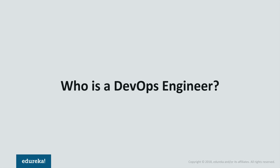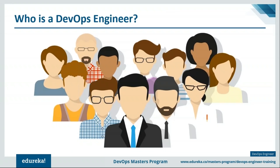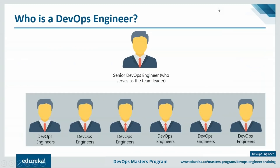Let's understand who is a DevOps engineer. A dedicated DevOps team consists of a few professionals who are each responsible for different elements. Like any other team, there are two main roles: the senior DevOps engineer who serves as a team leader, and the DevOps engineer. The senior DevOps engineer architects and plans the complete delivery process as well as which tools will be used, supervising overall operations and understanding the entire environment.